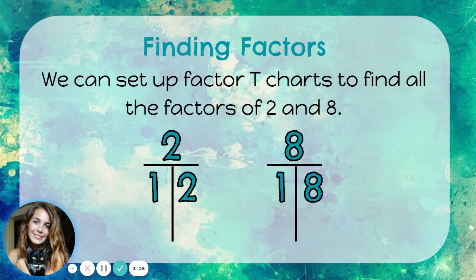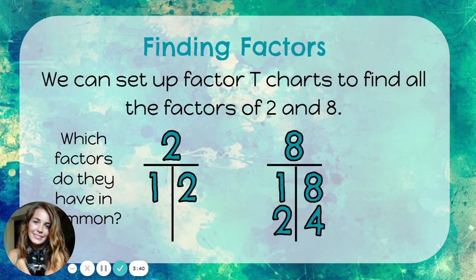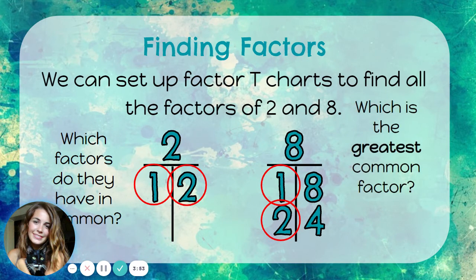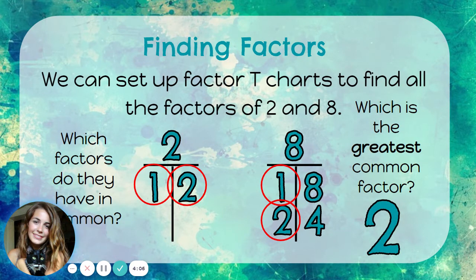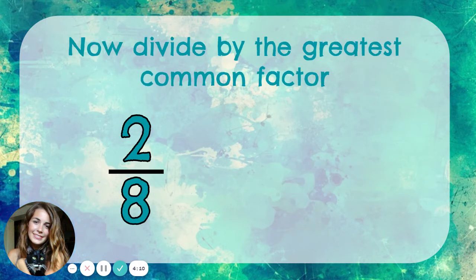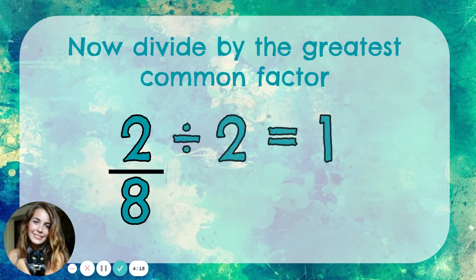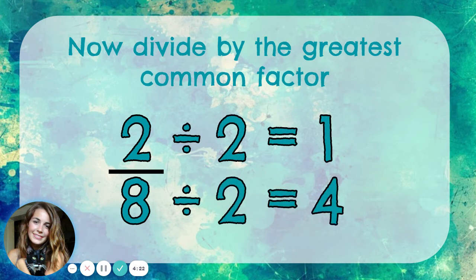Now let's think about eight. One times eight is eight, and two times four is eight. So one, two, four, and eight are all the factors of eight. Which factors do they have in common? I see one on both factor T-charts, and they both have two as a factor. They have one and two in common, but two is the greatest common factor — it's the biggest factor that they both have. Now we can divide by the greatest common factor to simplify this fraction. Two divided by two is one, and eight divided by two is four. So two-eighths in simplest form is one-fourth.